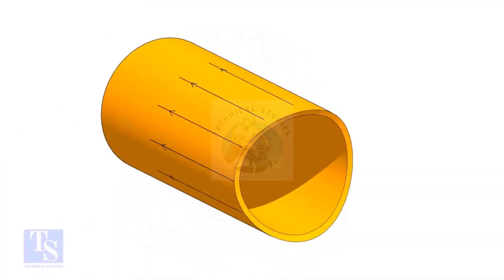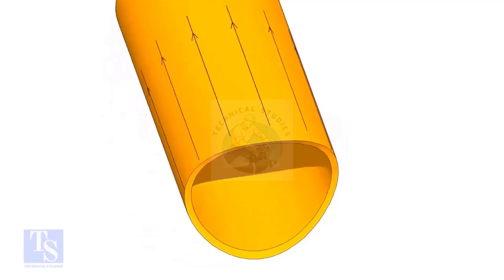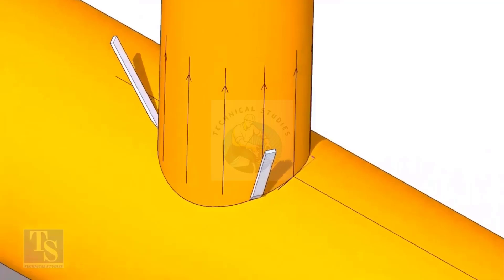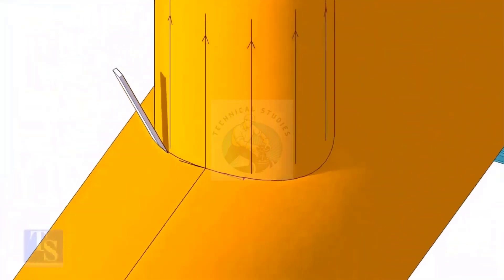After cutting and grinding the notch on the branch pipe, put it on the header. Make sure it is exactly in its position and mark the opening on the header as shown.